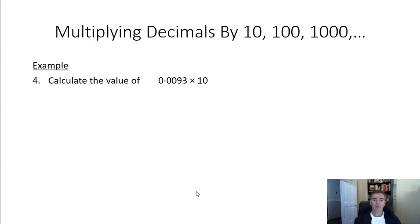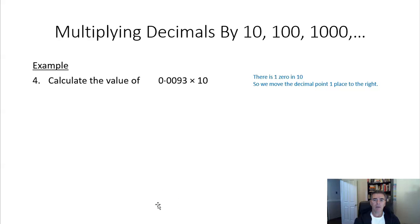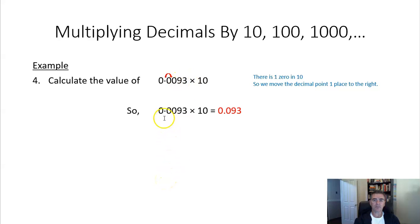Let's have a look at a fourth example: 0.0093, which is a very small number, and we're going to make it 10 times bigger — multiply it by 10. There's one zero in 10, so we move the decimal point one place to the right. When we do that, our decimal point moves here, so now we have 0.093 after the decimal point. So 0.0093 times 10 gives us 0.093. Just be careful with your zeros that you don't mix those up.